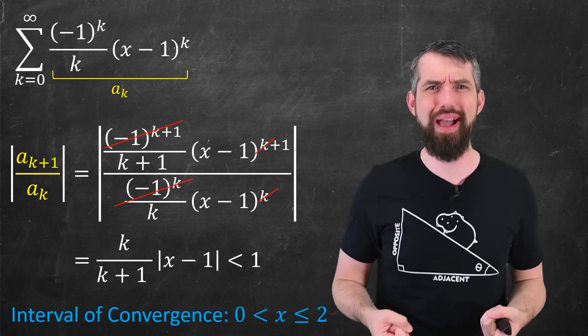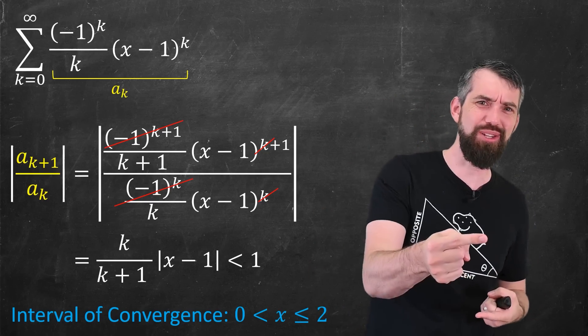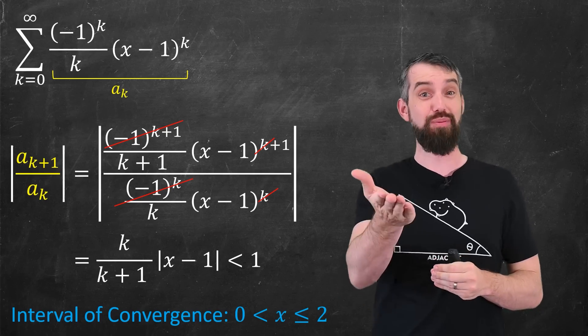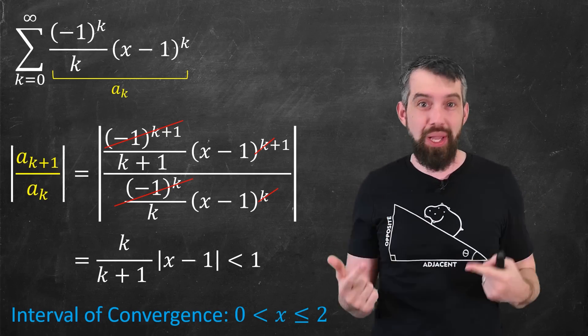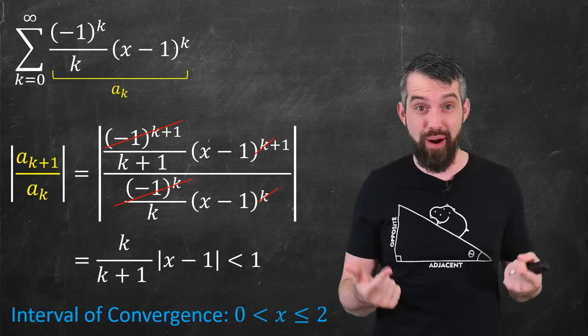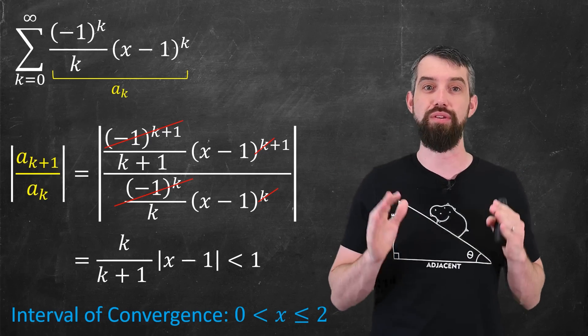I've also done a couple things quickly in my head. If I actually plug in 2, I get the alternating harmonic series which converges. That's why I said less than or equal to 2. If I plug in the value of 0, it's the harmonic series which diverges, and so I don't have an equality on the other side.